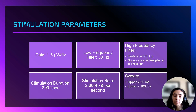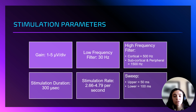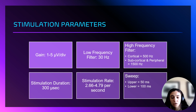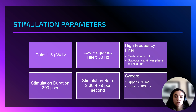These are the stimulation parameters for SSEPs. The gain is 1 to 5 microvolts. The low frequency filter is 30 Hz, which helps filter out lower frequency noise like artifacts. The high frequency filter is 500 Hz for cortical measurements and 1500 Hz for subcortical and peripheral measurements. The stimulation duration lasts about 300 microseconds, and its rate is around 2.6 to 4.8 times per second. The sweep parameters are around 50 milliseconds for the upper body and 100 milliseconds for the lower body.